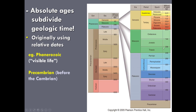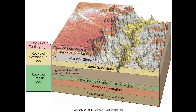We use absolute ages to subdivide the geologic time scale, and also when we don't have a lot of igneous rocks in an area, to give us an idea of how relatively old or young different rock layers are. Here at Bryce Canyon National Park, we have many sedimentary rock layers — which can't be directly dated — but there's a volcanic ash bed deposited between the Morrison formation and a brown layer above, dated at 160 million years old. There's also an igneous dike that intruded through several of those layers, dated at 66 million years old.